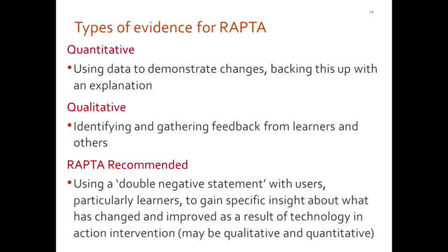The idea of the types of evidence — there are different types of evidence to support self-assessment processes. This might be quantitative evidence, showing improvements in achievement, retention or success rates, or qualitative data from feedback from learners, comments on surveys and learner voice. But for the Raptor questions, it's recommended to use something called a double negative statement to gain an insight into how technology has changed or improved the way we do things.